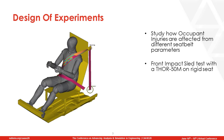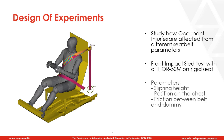The test that will be used is a front impact sled test with a Thor 50M on a rigid seat. The parameters that will be studied are the shoulder slip ring height, the position on the chest from where the belt passes, and the friction between the belt and the dummy.